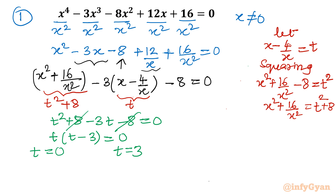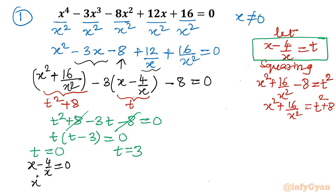If t equals 0, and since t is x minus 4 over x, substituting back: x minus 4 over x equals 0. Multiplying both sides by x gives x squared minus 4 equals 0, so x squared equals 4, which means x equals plus or minus 2.